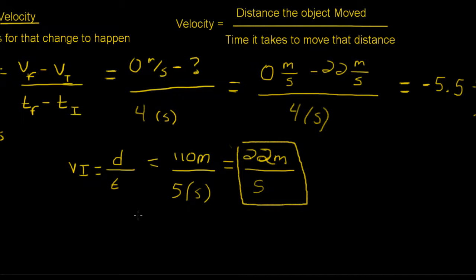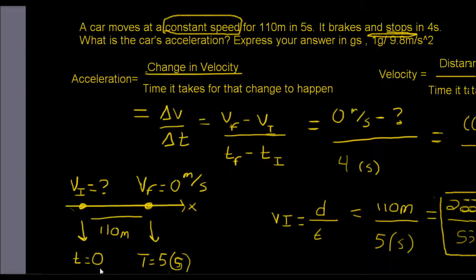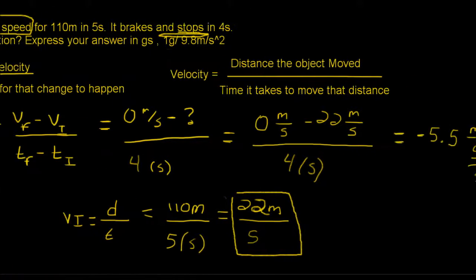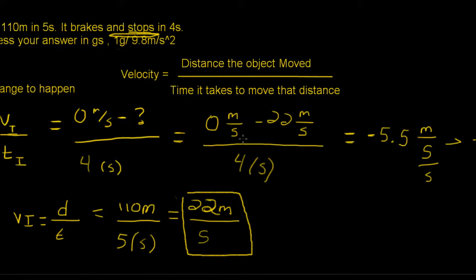So we're going to plug that into our equation, which is the line we had initially up here. So we'll plug that in for the initial velocity. And since the final velocity was 0, minus the initial velocity, we can ignore the 0 and just plug this right here into our calculators.